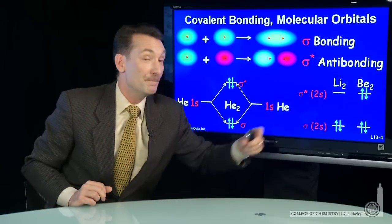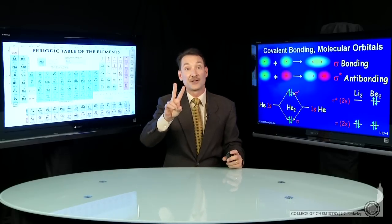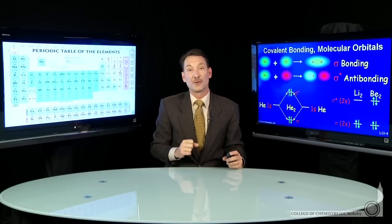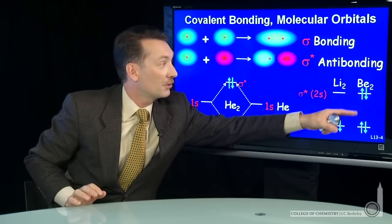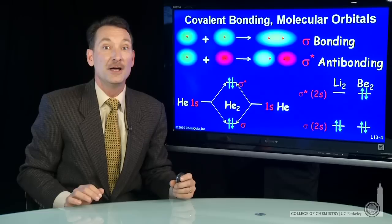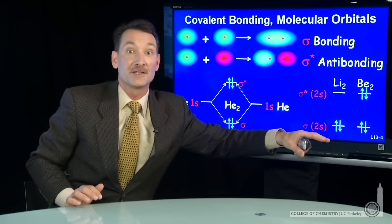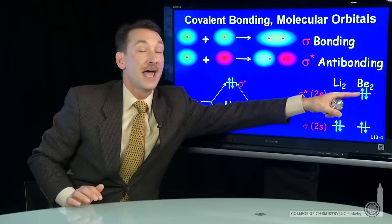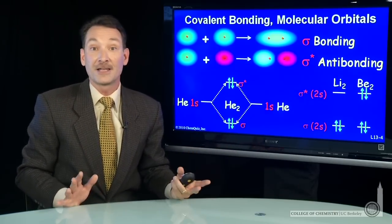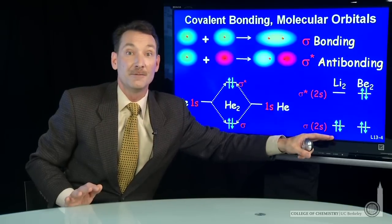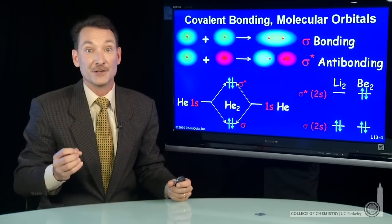When we look at beryllium, Be2, beryllium has two electrons in its 2s orbital. So for beryllium, four total electrons. Be2 has four electrons. I'll put two electrons in the bonding sigma and two electrons in the antibonding sigma star orbital. I'll calculate the bond order: two electrons for bonding minus two antibonding electrons. The bond order is zero.